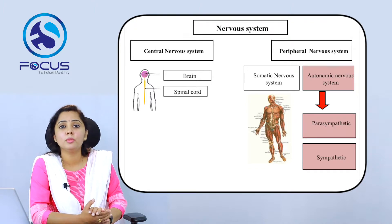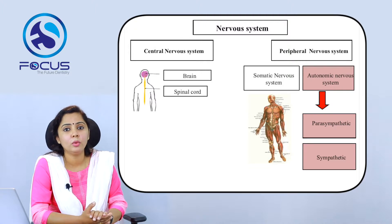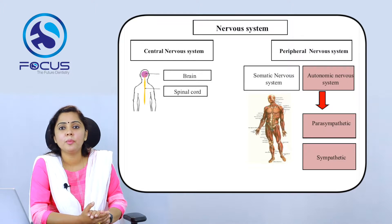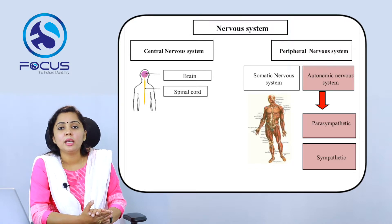The somatic nervous system is mainly concerned with supplying the skeletal muscles — in other words, it is voluntary in nature. The autonomic nervous system is mainly concerned with supplying the viscera, or concerned with vegetative functions — in other words, it is involuntary in nature.